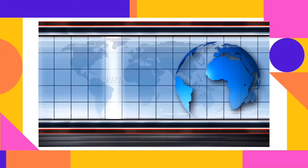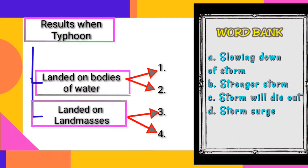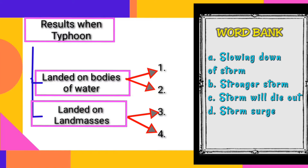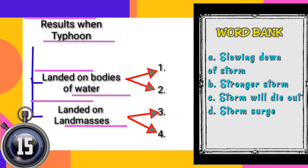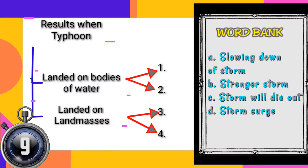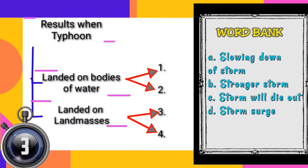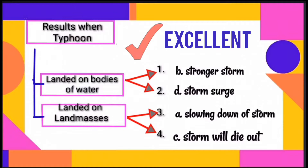Let us review your previous lesson. In this activity, you will choose a letter with the correct terms or statements inside the box. Choose your answer from the word bank. The answers can be in any order. You only have 15 seconds to answer. Let us check your answers — if you got all the answers correct, you are excellent!